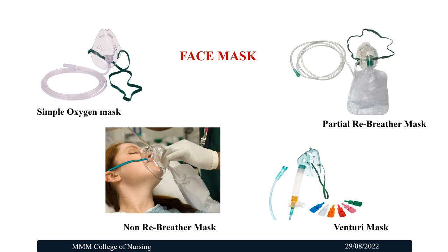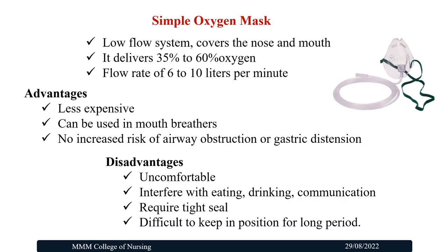Next method is the Face Mask. Examples include Simple Oxygen Mask, Partial Rebreather Mask, Non-Rebreather Mask, and Venturi Mask. The Simple Oxygen Mask is a low flow system that covers the nose and mouth, delivering 35–60% Oxygen at a flow rate of 6–10 litres per minute. Advantages: less expensive, can be used in mouth breathers, no risk of airway obstruction or gastric distension. Disadvantages: uncomfortable, interferes with eating, drinking, and communication, requires a tight seal, and is difficult to keep in position for a long period.